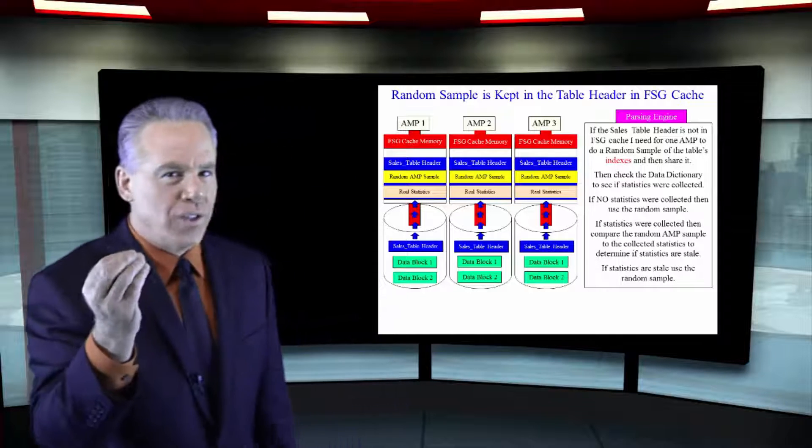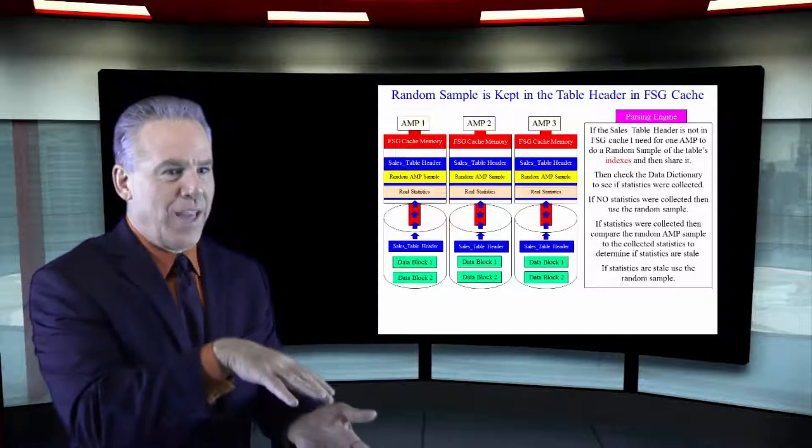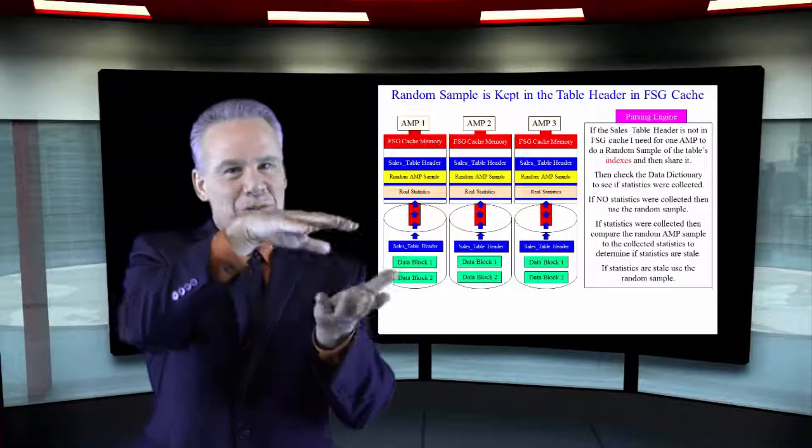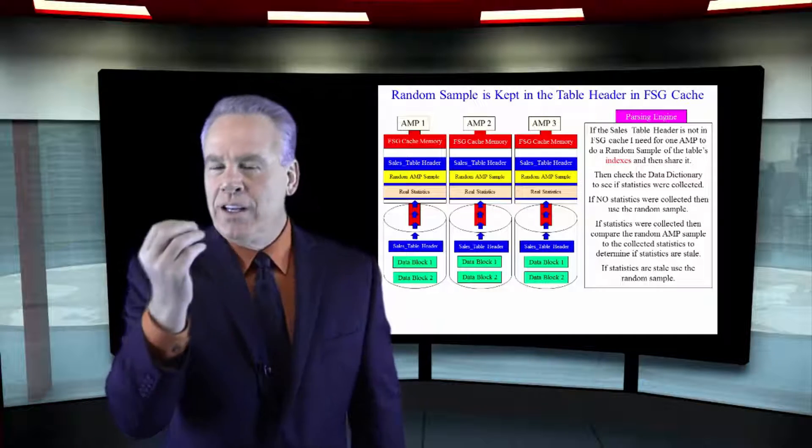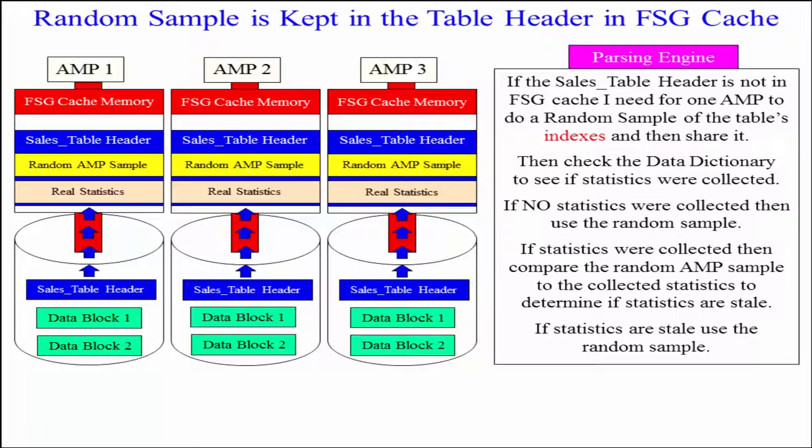They will also then say, let's do a random AMP sample and put that in the table header and move that up in there. So, we can compare the sample to the real statistics to see if those real statistics are stale.